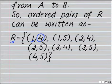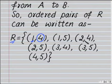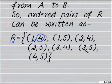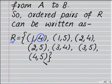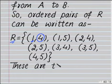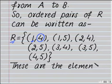For example: in ordered pair (1,4), 1 is less than 4; in ordered pair (1,5), 1 is less than 5; in ordered pair (2,4), 2 is less than 4; in ordered pair (2,5), 2 is less than 5; in ordered pair (3,4), 3 is less than 4; in ordered pair (3,5), 3 is less than 5; and in ordered pair (4,5), 4 is less than 5. So these are the elements of R.